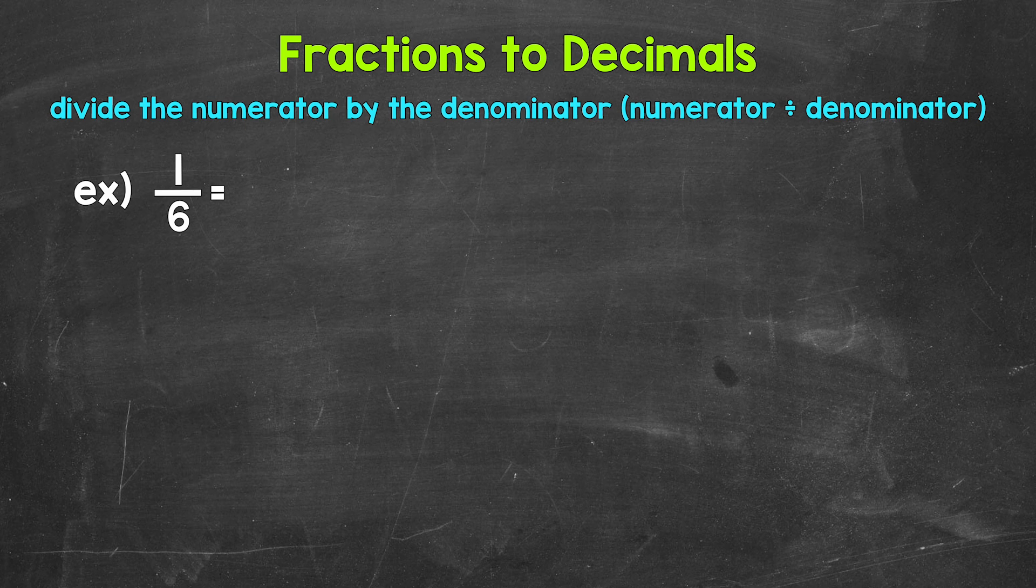Now when we convert a fraction to a decimal, we can do this by dividing the numerator, the top number of the fraction, by the denominator, the bottom number of the fraction.